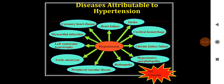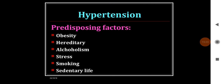Hypertension mainly affects the vascular system combined with vascular disease like atherosclerosis, damaging various organs and leading to stroke, heart failure, cerebral hemorrhage, chronic kidney failure, hypertensive encephalopathy, retinopathy, peripheral vascular disease like Buerger's disease, aortic aneurysm, left ventricular hypertrophy, myocardial infarction, coronary heart disease, and heart failure. Predisposing factors for primary hypertension include obesity, hereditary causes, alcoholism, stress, smoking, and sedentary lifestyle.